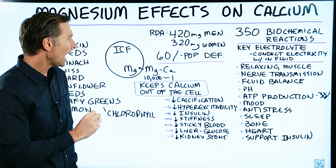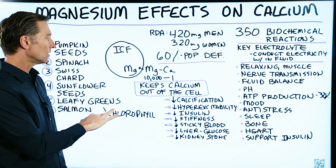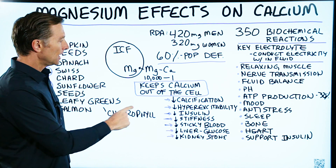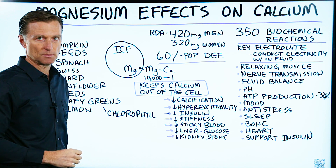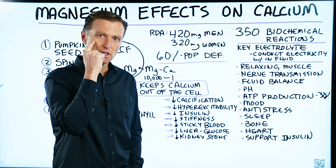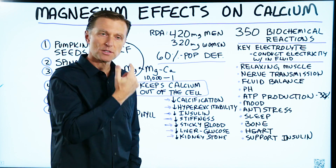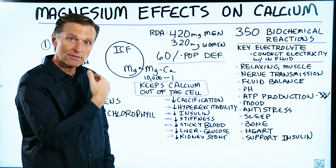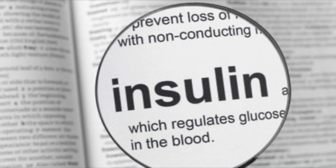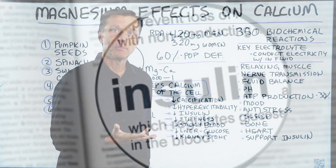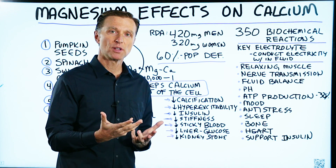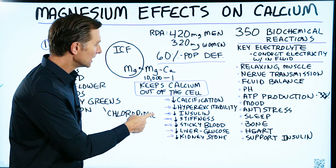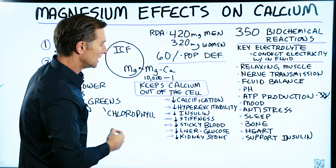When we have too much calcium and too little magnesium, you get a hyper-excitability of the nervous system. You start getting little twitches in different parts of your body, maybe the left eyelid or another part of the body. You also have problems with insulin — insulin starts going up. So having the right ratios of magnesium to calcium can keep your insulin in check.